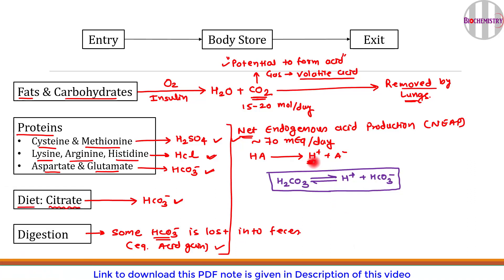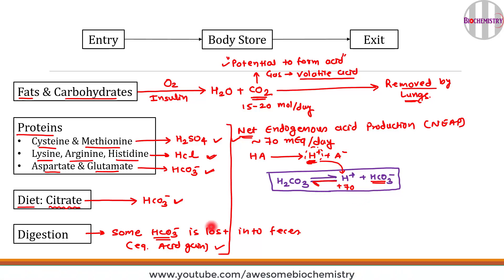When 70 milliequivalents of H⁺ is produced daily and poured into the extracellular fluid, the excess H⁺ binds with HCO₃⁻, shifting the reaction leftward to form H₂CO₃, so there is no change in free H⁺ concentration. However, this comes at a cost — if more H⁺ arrives, more bicarbonate is required and consumed.